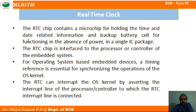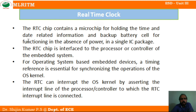The real-time clock interrupts the OS kernel by asserting the interrupt line of the processor or controller to which the RTC interrupt line is connected. We connect the RTC interrupt to a particular line of the processor, and the RTC interrupt line will provide a signal to that particular line of the processor or controller.